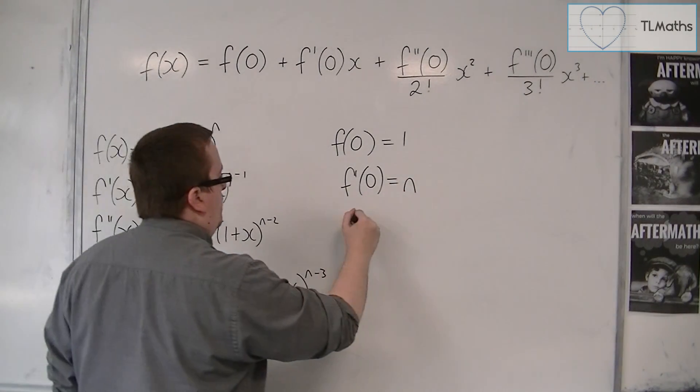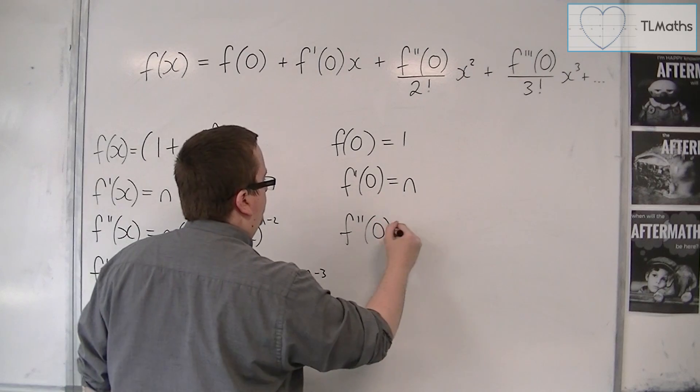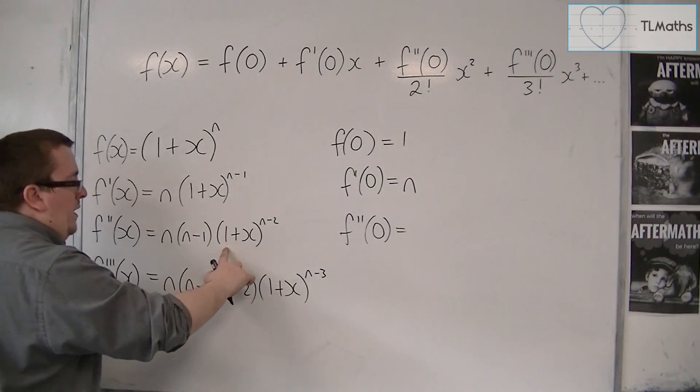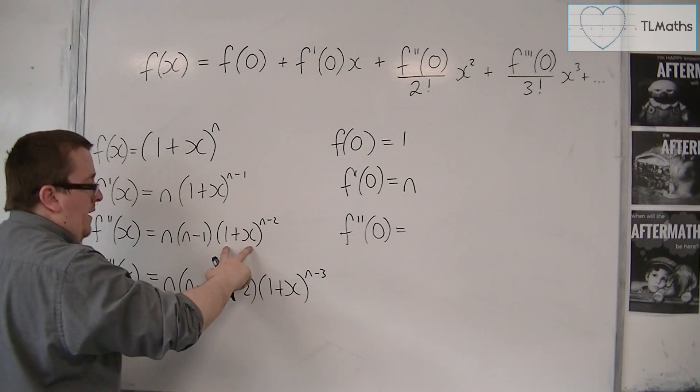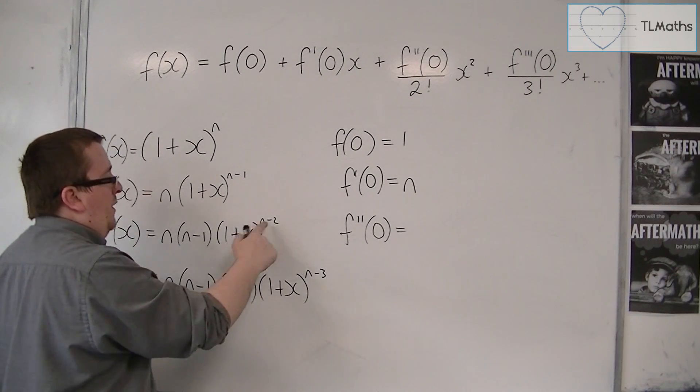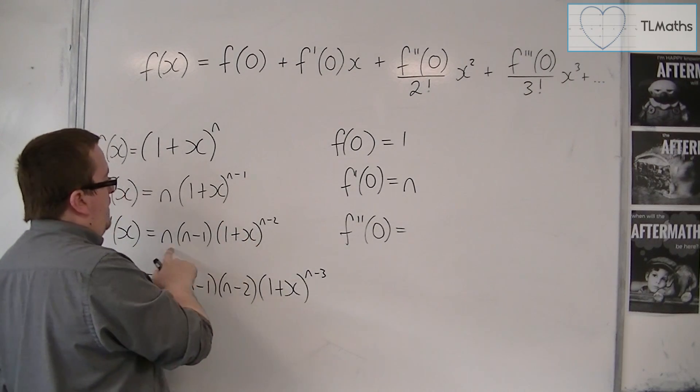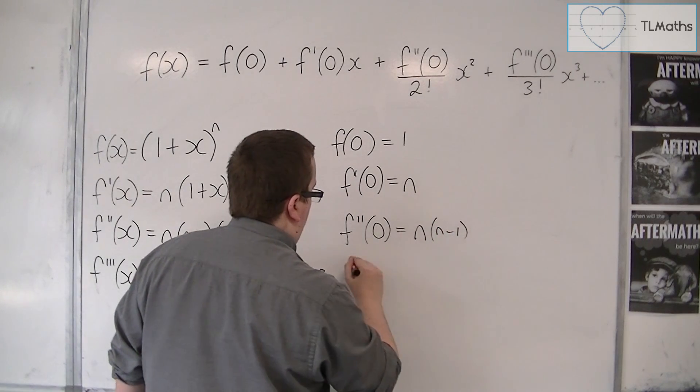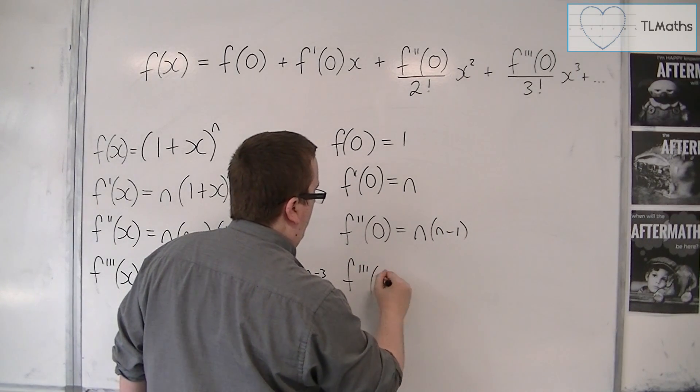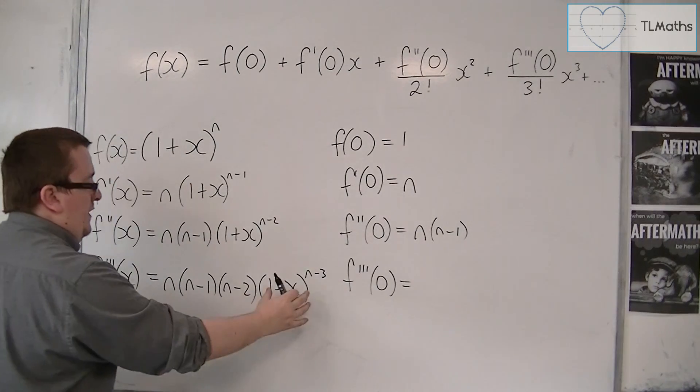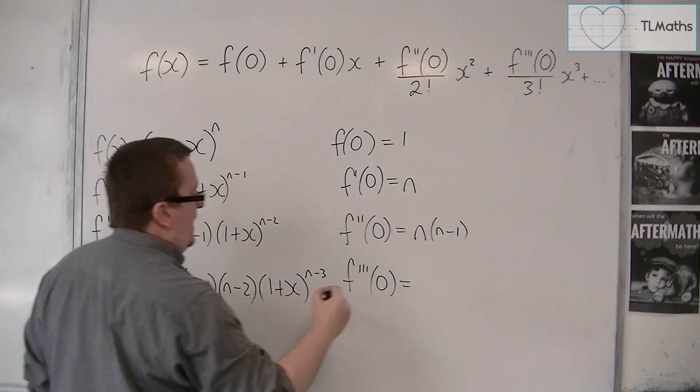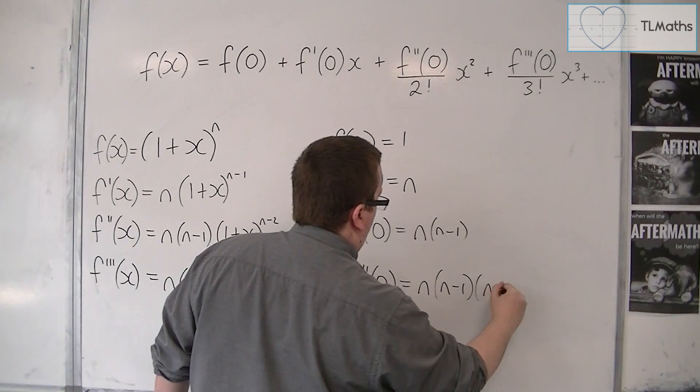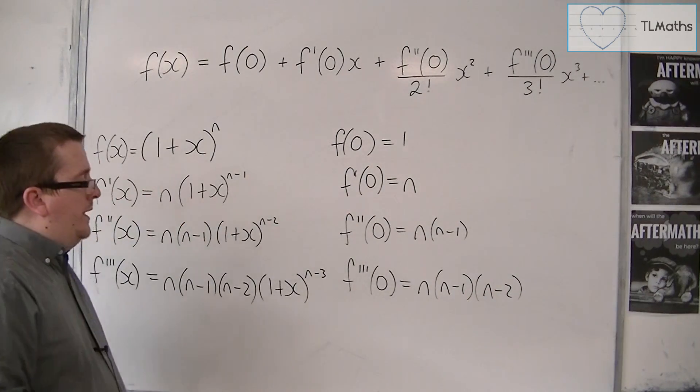And then we're going to have f double prime of 0. So 1, so that's just 1, because x is 0. So 1 to the n minus 2 is just 1. So we have n times n minus 1. And then maybe you can guess what this next one's going to be. This is just going to be 1 again. We're going to have the n, n minus 1, n minus 2.